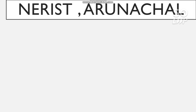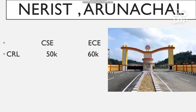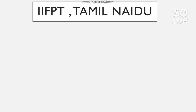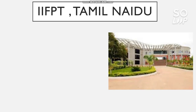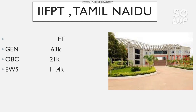The next is NERIST Arunachal Pradesh, also a GFDI accessible through JOSAA counseling. Only the CRL cutoff is available here - there is no category-wise reservation. For CS you need a CRL rank of 50,000 and for EC it is 60,000. The next is IIFPT Tamil Nadu, which has only one branch - Food Technology. The General cutoff is 63,000, OBC is 21,000, EWS is 11,400. For SC it is 10,500 and for ST it is 6,400.